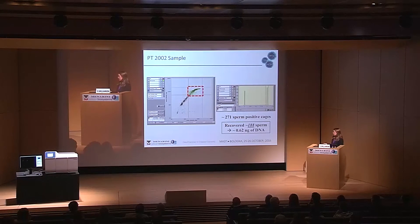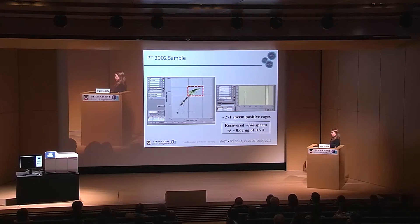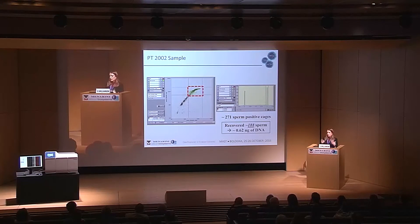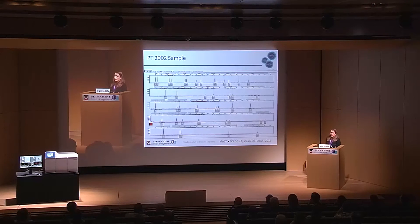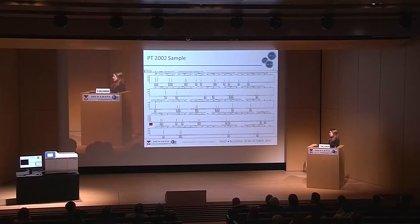This plot represents the relationship of DAPI to APC, and we identified a great presence of sperm-positive events. From this sample, we recovered 188 sperm cells, which is approximately 0.62 nanograms of DNA. It's important to note that in forensics, one nanogram of DNA is considered an extraordinary amount — you're technically swimming in DNA if you have a nanogram. We were able to create a genetic profile from that sample. This electropherogram shows a good single source profile: peak heights are of high intensity, the peaks are balanced, and there are alleles present at every locus. As Francesca mentioned, these loci are male-specific, indicative of sperm.